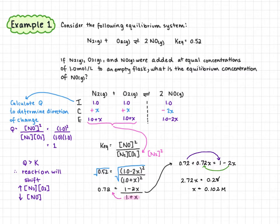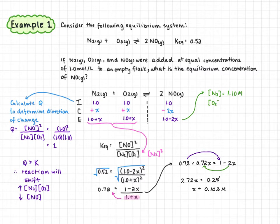That x value is in moles per liter. We now plug it back in to solve for our equilibrium concentrations. The equilibrium concentration of nitrogen is 1 plus x, giving 1.10 mol/L. The equilibrium concentration of oxygen is the same as nitrogen, also 1.10 mol/L. The equilibrium concentration of nitrogen monoxide is 1 minus 2x, which is approximately 0.80 mol/L.